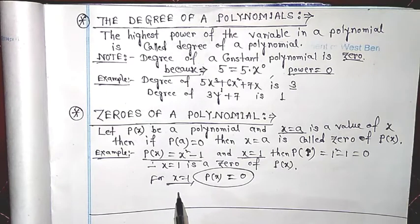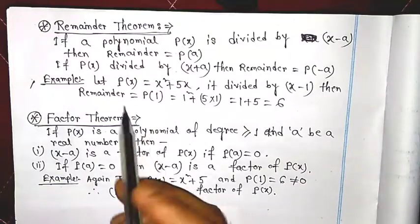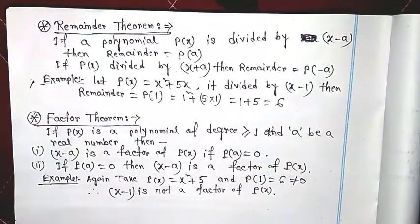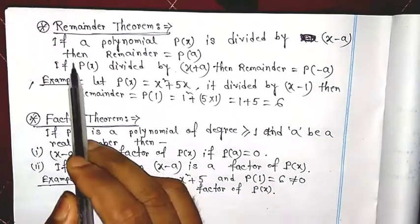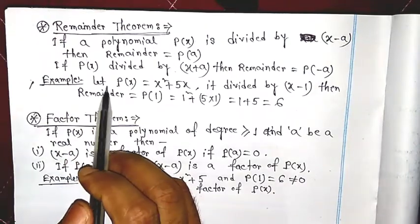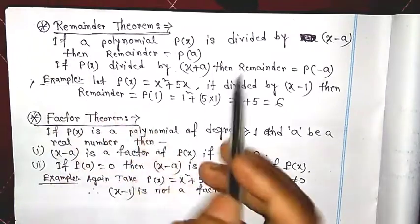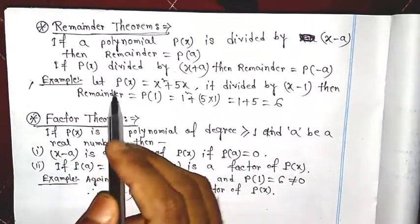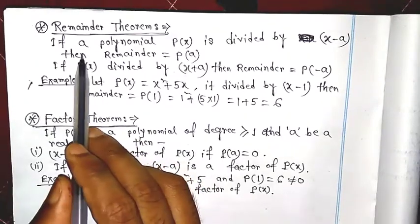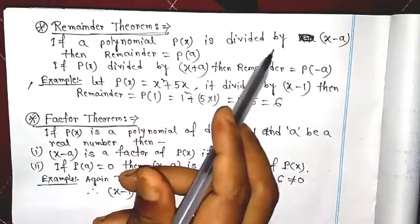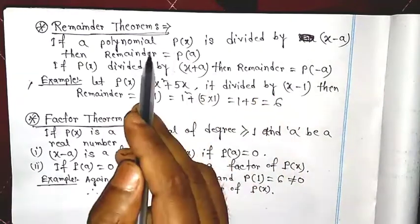So x = 1 is the zero of the polynomial p(x). This is the concept of zeros of a polynomial. Next I discuss two theorems: the first is the Remainder Theorem and the second is the Factor Theorem. Without division, we can find a remainder — that's very interesting.